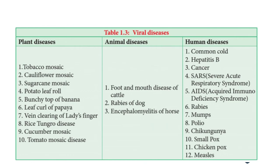First we will discuss about the plant diseases: tobacco mosaic, cauliflower mosaic, sugarcane mosaic, potato leaf roll, bunchy top of banana, leaf curl of papaya, vein clearing of lady's finger, rice tungro disease, cucumber mosaic, and tomato mosaic disease. These are the plant viral diseases.